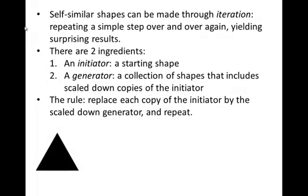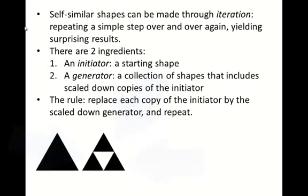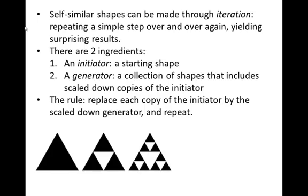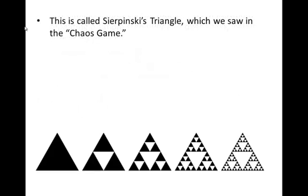Let's try an example. Suppose I give you a black triangle as your initiator — your starting shape. And then as your generator I give you the same triangle with the middle third cut out. Notice that the generator is built out of three triangles who look just like the initiator, so I could replace each one of those three little triangles by a scaled down version of the generator. Now I've got nine little triangles who look like scaled down versions of the initiator, so I replace them with the generator and repeat again and again and again. And we've recovered this triangle, which is known to mathematicians as Sierpinski's triangle.